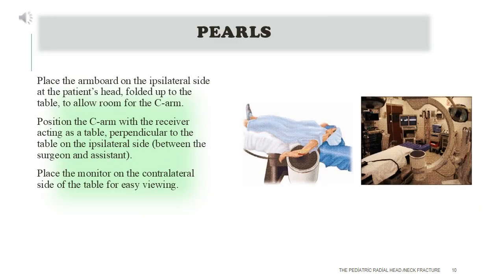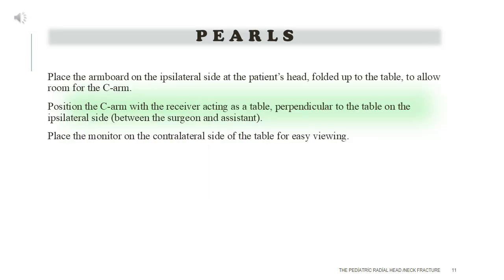Pearls — OR setup: place the arm board on the ipsilateral side at the patient's head, folded up to the table, to allow room for the C-arm. Position the C-arm with the receiver acting as a table, perpendicular to the table on the ipsilateral side, between the surgeon and assistant. Place the monitor on the contralateral side of the table for easy viewing.